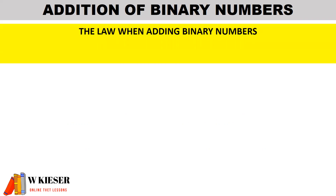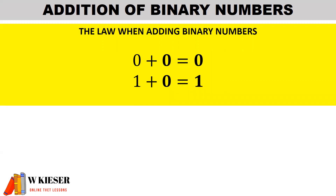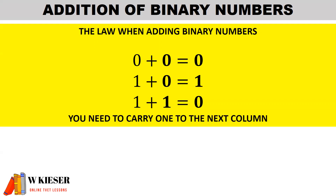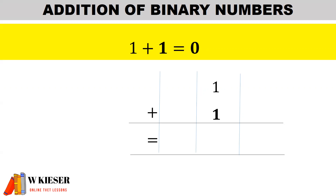Before we look at an example, let's take a look at the laws for adding binary numbers. According to the law: 0 plus 0 equals 0; 1 plus 0 equals 1; and 1 plus 1 equals 0 with a carry of 1 to the next column. For example, in the first column on the right-hand side, 1 plus 1 gives 0 carry 1. In the next column to the left, we have an imaginary 0, so 1 plus 0 equals 1.